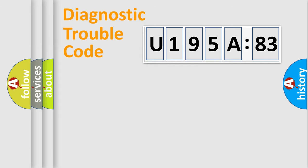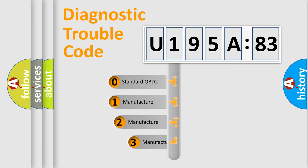Powertrain, Body, Chassis, Network. This distribution is defined in the first character code.